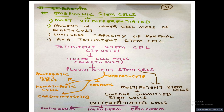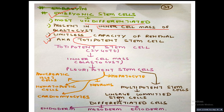There are two main kinds of stem cells: embryonic stem cells and tissue stem cells. Embryonic stem cells are the most undifferentiated kind of cells, present in the inner cell mass of the blastocyst. They have a limitless capacity of renewal and are also known as totipotent stem cells.